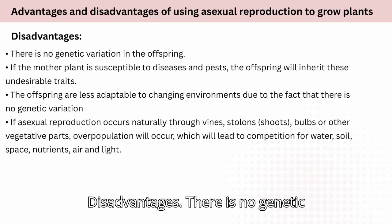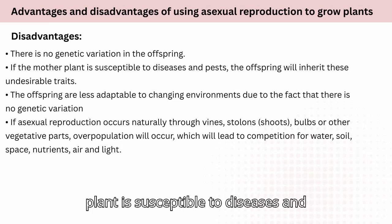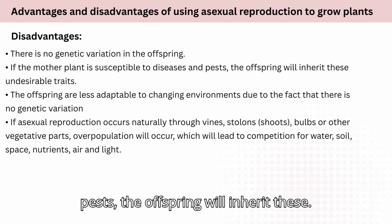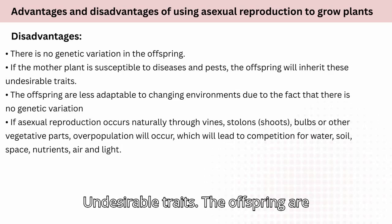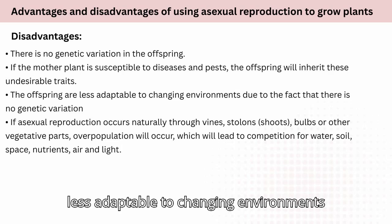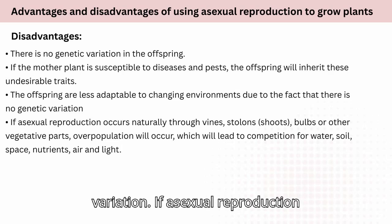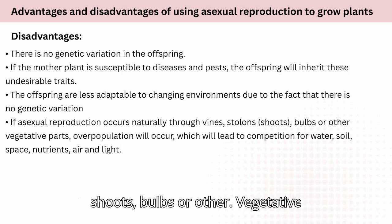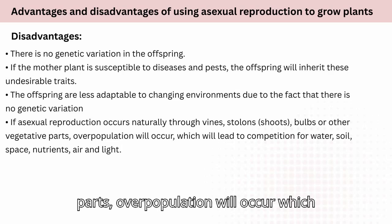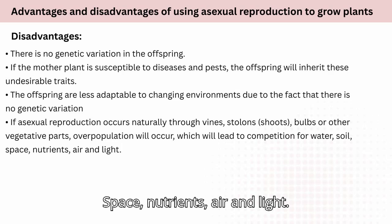Disadvantages: there is no genetic variation in the offspring. If the mother plant is susceptible to diseases and pests, the offspring will inherit these undesirable traits. The offspring are less adaptable to changing environments due to lack of genetic variation. If asexual reproduction occurs naturally through vines, stolons, shoots, bulbs, or other vegetative parts, overpopulation will occur, leading to competition for water, soil space, nutrients, air, and light.